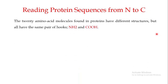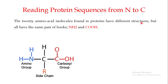The 20 amino acid molecules found in proteins have different structures but they all have the same pair of hooks. If you look at the general structure of an amino acid, you will always find a carboxylic group, an amino group, a hydrogen group, and a side chain. All amino acids have the same hooks — they all have an amino group and a carboxyl group.